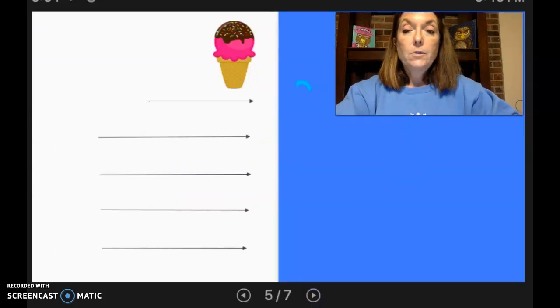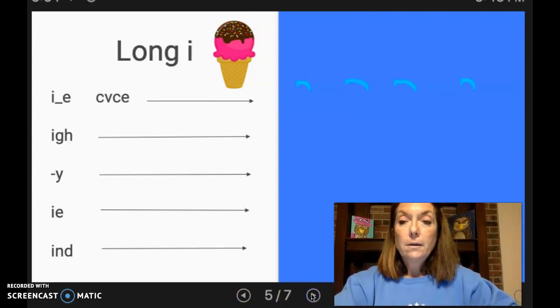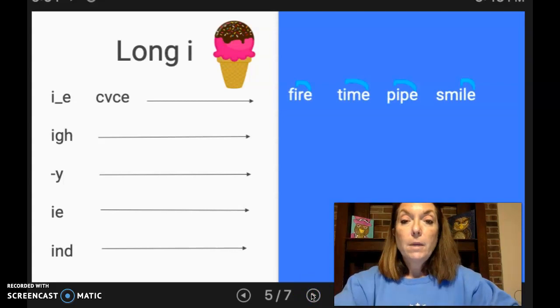All right, now moving on to the long I sound. One of my favorite things, which is ice cream, is with the long I sound. And here we go. We're going to start with our I blank E. We have fire, time, pipe, and smile.